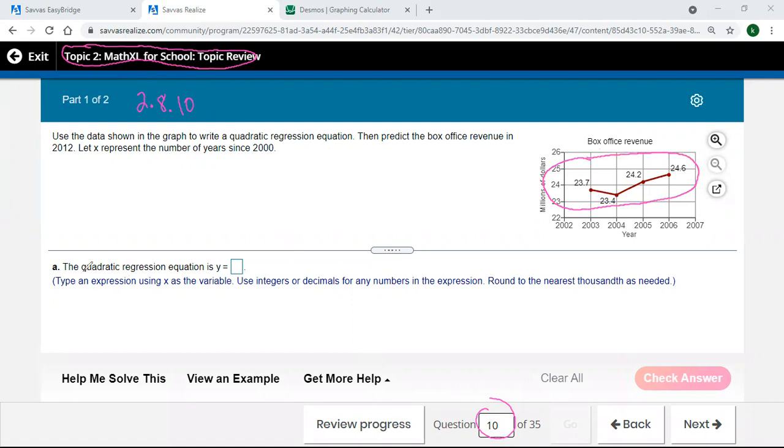We want to do a quadratic regression on it to come up with an equation. They usually tell you down here, round to the nearest - in this case thousandth - so that's three decimal places.